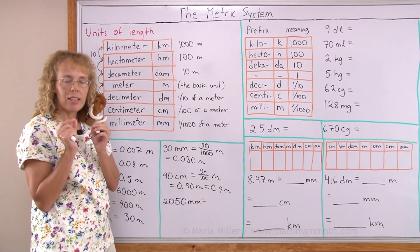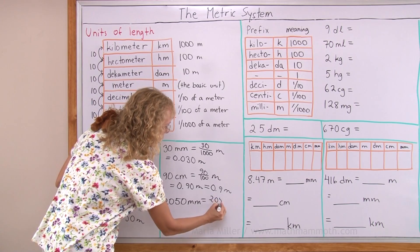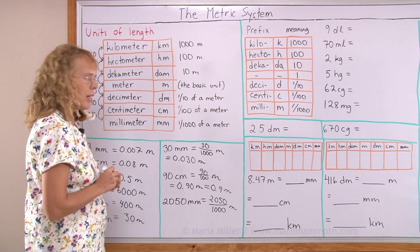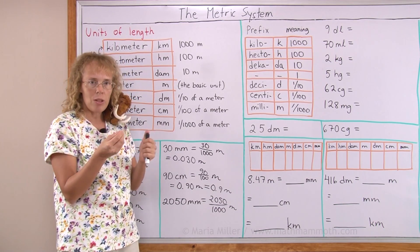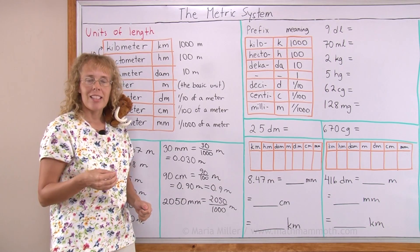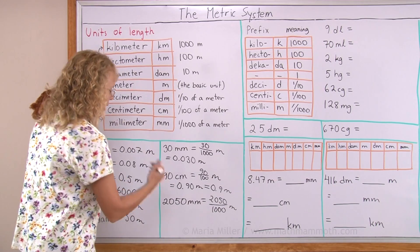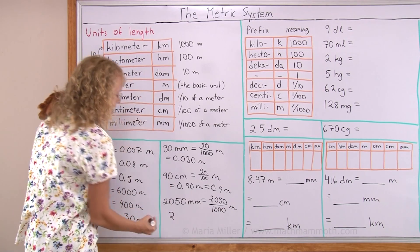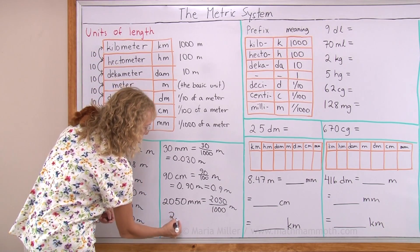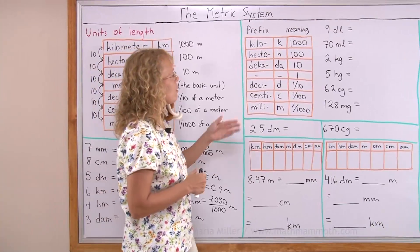Two thousand fifty millimeters. Milli is a thousandth part, so two thousand fifty thousandths of a meter. Now you probably see that two thousand, if it was two thousand, it would have been exactly two meters, because two thousand over a thousand would be exactly two. So the way I do it is, I know that there's going to be two meters and then the rest of the digits follow after the decimal point: 2.050 meters.